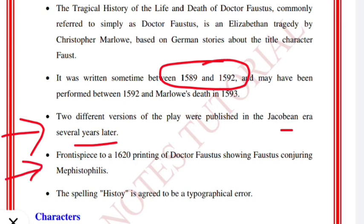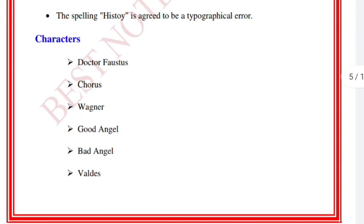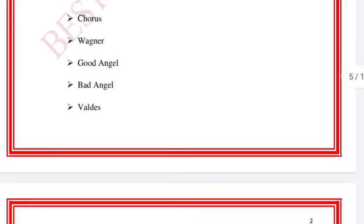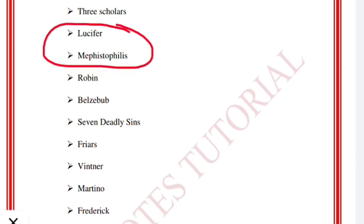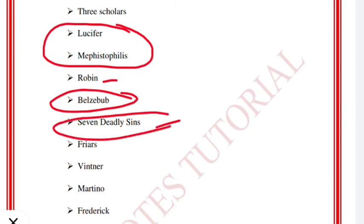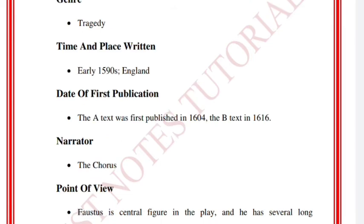Two different versions of the play were published in the Jacobean era several years later. The frontispiece of the 1620 printing of Dr. Faustus shows Faustus conjuring Mephistopheles. Mephistopheles is an important character in this work. Some of the characters are: Dr. Faustus, Chorus, Wagner, Good Angel, Bad Angel, Valdez, Cornelius, Three Scholars, Lucifer, Mephistopheles — these are important — Beelzebub, Robin, and Seven Deadly Sins. Seven Deadly Sins is also asked in exams: which work contains them.